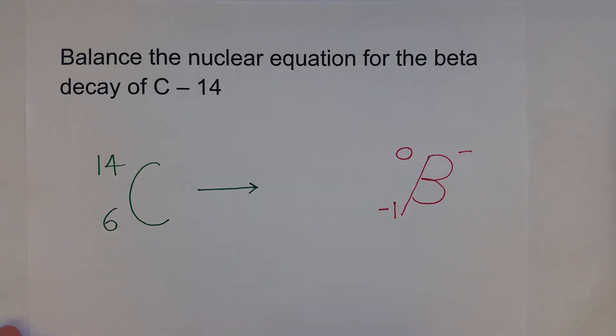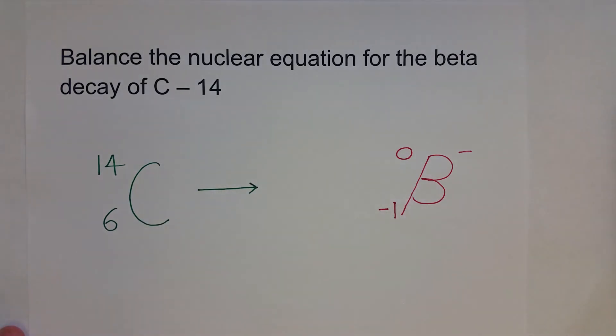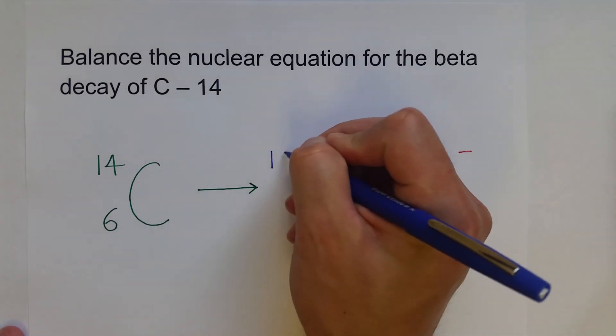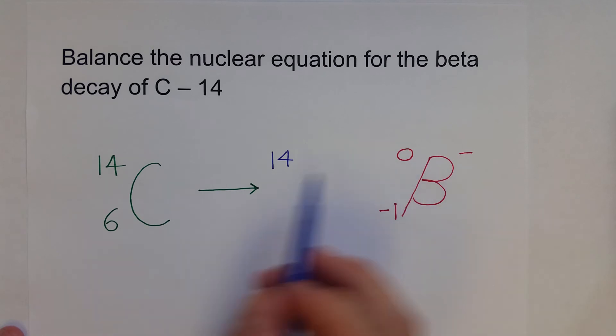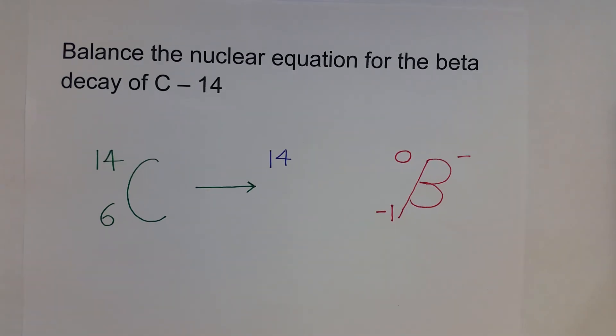All right, so the mass number is going to be really simple to find out. 14 plus zero equals 14, and so now we can see that our mass numbers are equal on both sides.